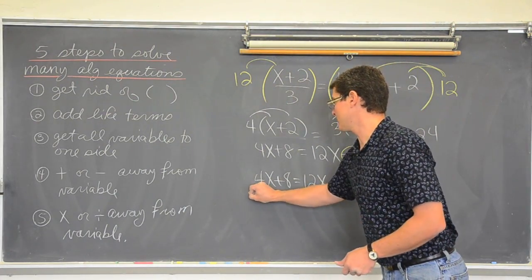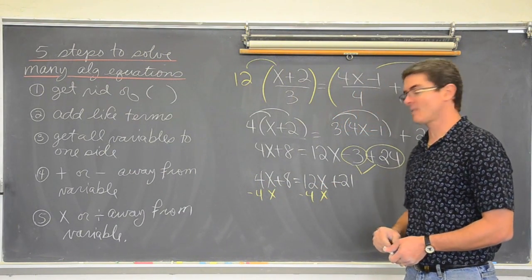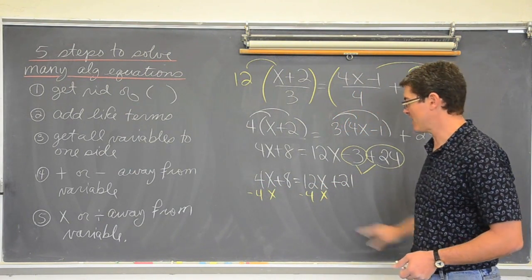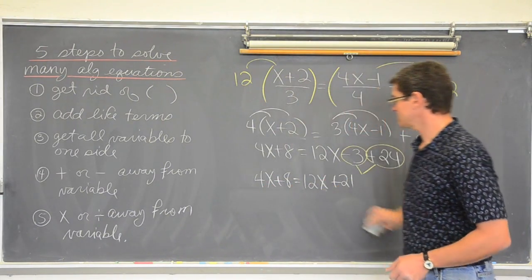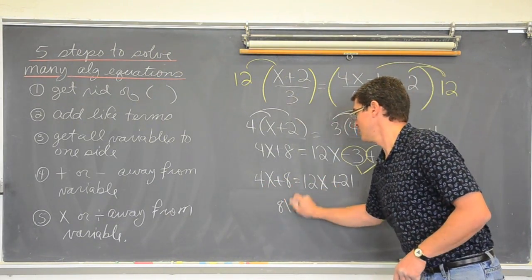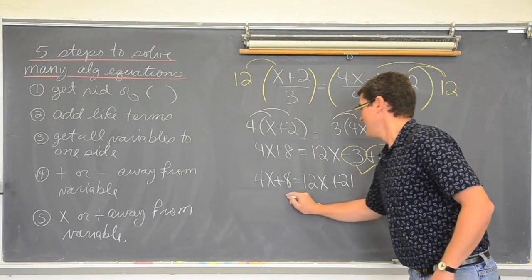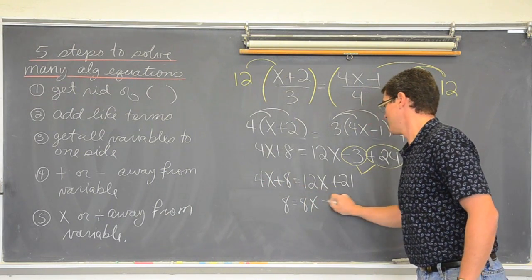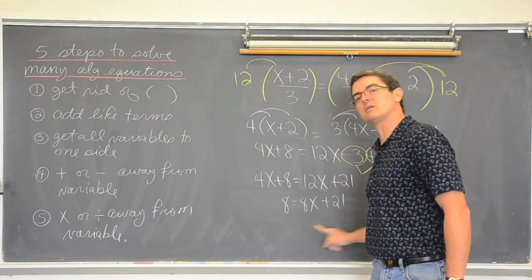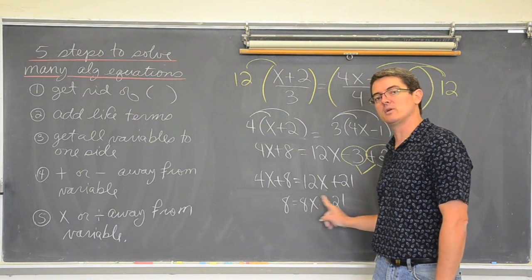So, I am going to subtract four from the left and right hand side. I am going to erase it though because I am starting to run out of space. But I am going to move the four over with subtraction. I am going to get eight equals twelve minus four is eight x plus twenty-one. How does that twenty-one go away from the x? How do I make that twenty-one go over to the left hand side when it is already positive? You subtract it.